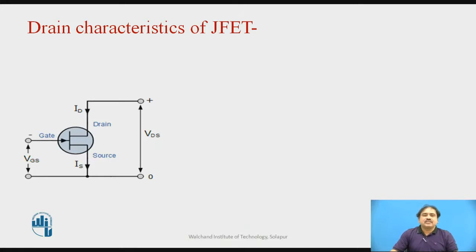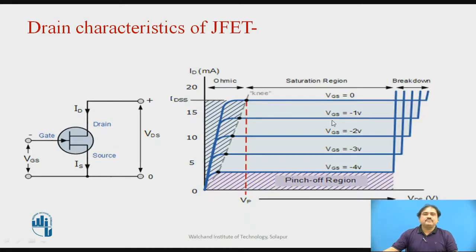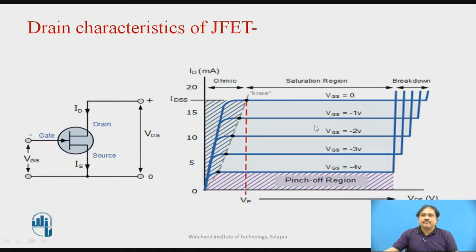Here I am showing a small FET symbol and the different voltages across different terminals. The graph shows the VI characteristics between the current flowing in the drain — the output current — and the voltage from drain to source. It has different regions. To plot this curve, we put the voltage VGS to some voltage level and keep it constant. In this given set of graphs, the VGS is varied from 0, then made reverse biased: minus 1, minus 2, minus 3, and minus 4 volts.